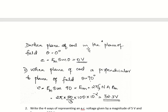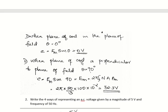When the plane of the coil is in the plane of the field, both are parallel, so theta equals 0 degrees. Therefore, E = EM sin 0 = 0. When the plane of the coil is perpendicular to the field, theta equals 90 degrees, so E = EM sin 90 = EM (maximum value). Substituting the values using the equation EM = 2πf × N × A × B gives the answer 52.3 volts.